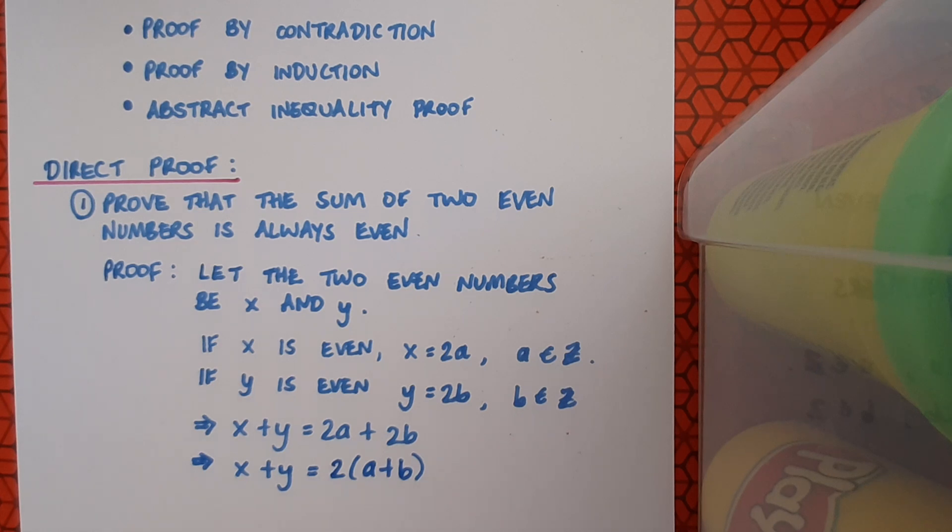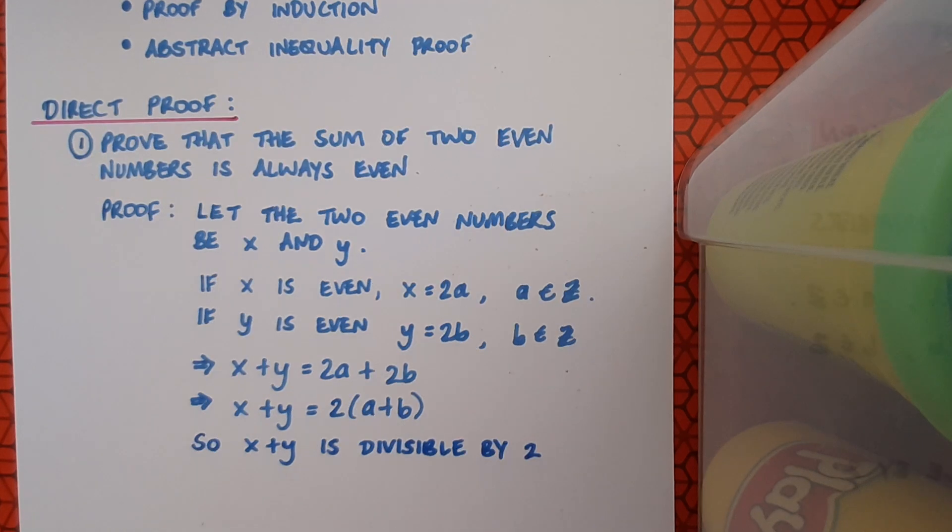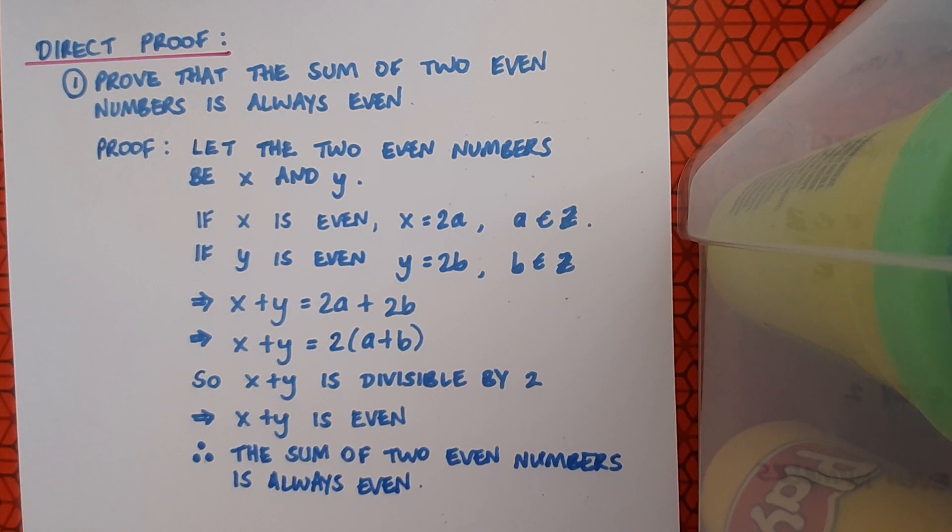So I can see that two is a factor of x plus y, and if two is a factor of x plus y, well then x plus y must be even. So I just want to state that. So I can say x plus y is divisible by two, or if you prefer, x plus y has a factor of two, and this of course implies that x plus y is even. So I can conclude my proof by saying that the sum of two even numbers is always even.